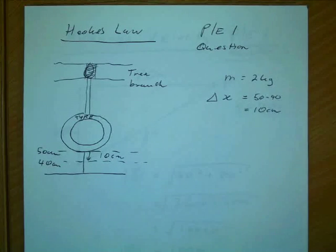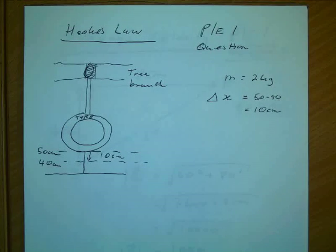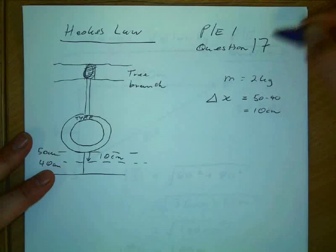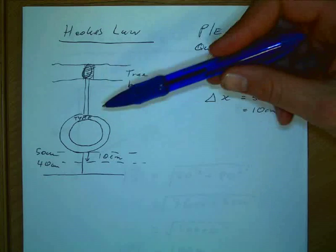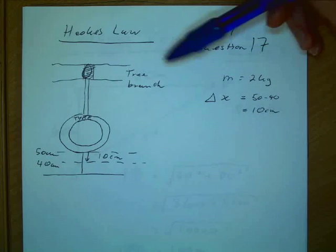So here's a Hooke's Law question from the practice exam, question 17. The idea is that a guy is building a backyard swing with a tire and a rope, so I've done a little diagram here.